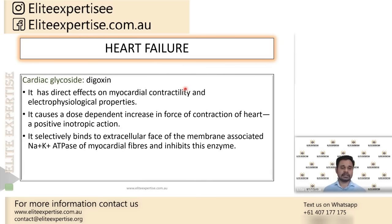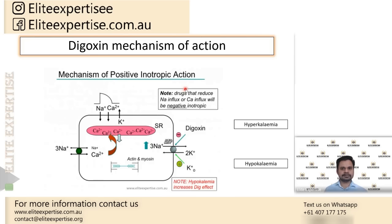The next and last important class of drugs is digoxin, a cardiac glycoside. Digoxin has a positive inotropic property — it increases the force of contraction. The main mechanism of action of digoxin is at the sodium-potassium ATPase pump. It indirectly increases intracellular calcium levels, and due to this increase in calcium, it causes contraction in cardiac myocytes.